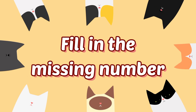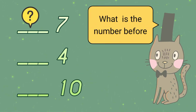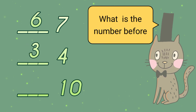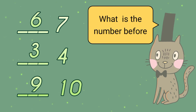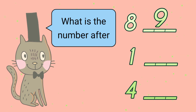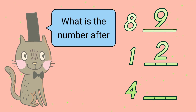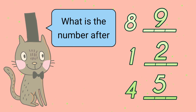Now let's try another drill. Let's fill in the missing number. What is the number before seven? Six. Right. What is the number before four? Three. Correct. What is the number before ten? Nine. Good job. What is the number after eight? Nine. Right. What is the number after one? Two. Correct. What is the number after four? Five. You're right.